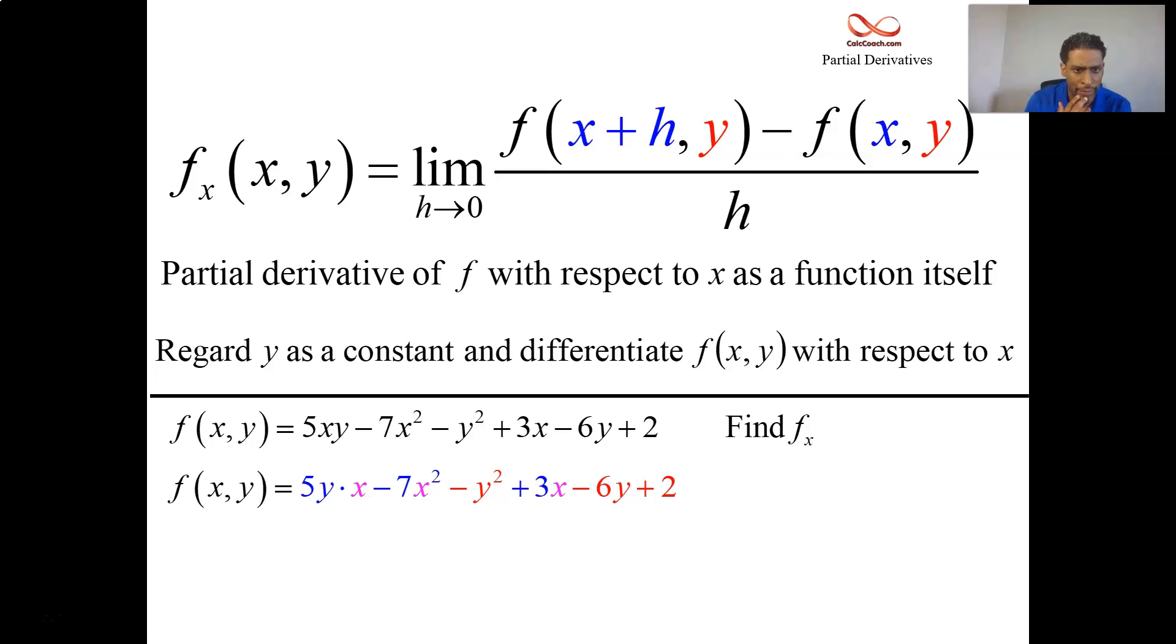I colored the terms with y's only in red. Then there is one term that has both x and y in it. I've put the y with the 5, treating it like a coefficient.